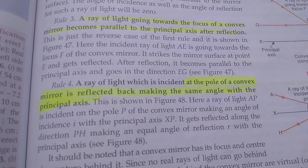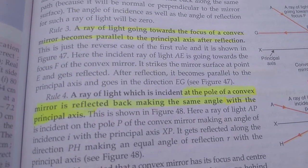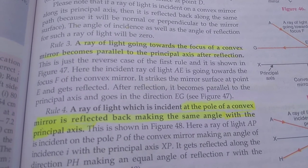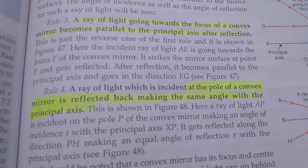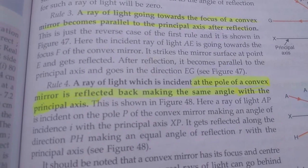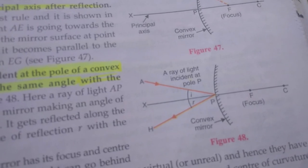And rule number four. A ray of light which is incident at the pole of a convex mirror is reflected back making the same angle with the principal axis. You can see the image. That is just like the reflection on the plane mirror surface.